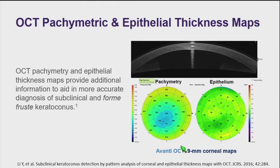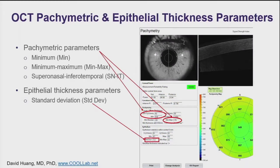The current commercial state-of-the-art system provides a 9-millimeter corneal map, and these systems can provide numerical parameters that help with diagnosis based on both the pachymetry map and the epithelial thickness map.